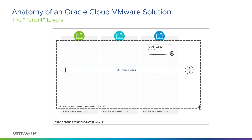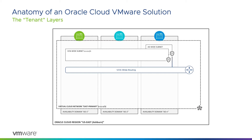Since launch, things have continued to develop across the Oracle Cloud, and one of those developments brought us the VCN-wide subnet. Just like the AD-wide version, we define this with an IP subnet, and it too gets an uplink into the VCN routing space. This is where we typically deploy Oracle Cloud Infrastructure virtual machines.